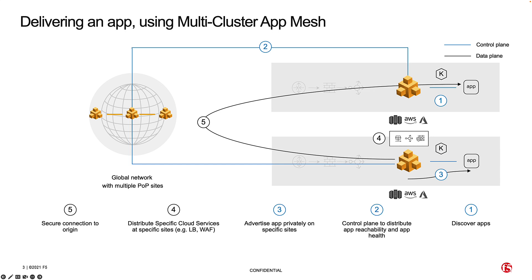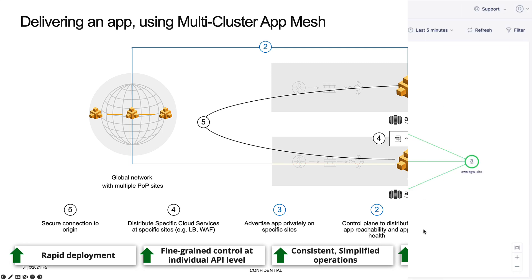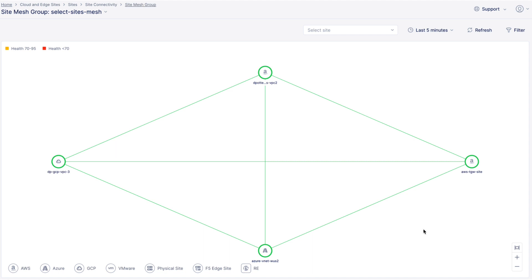This all establishes a secure end-to-end connection between the origin site and the destination site, and it's all done easily using the distributed cloud load balancers. This allows for rapid deployment, fine-grained controls, consistent operations, and best of all, being able to provide a unified visibility dashboard so that you can see how your applications are running, all within a glance in the distributed cloud console.